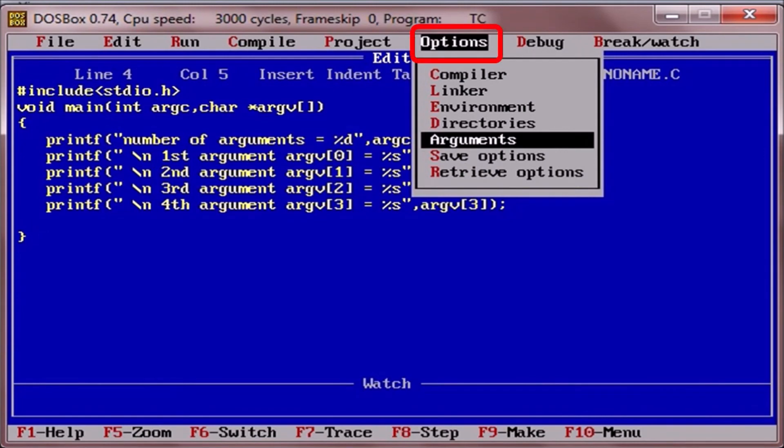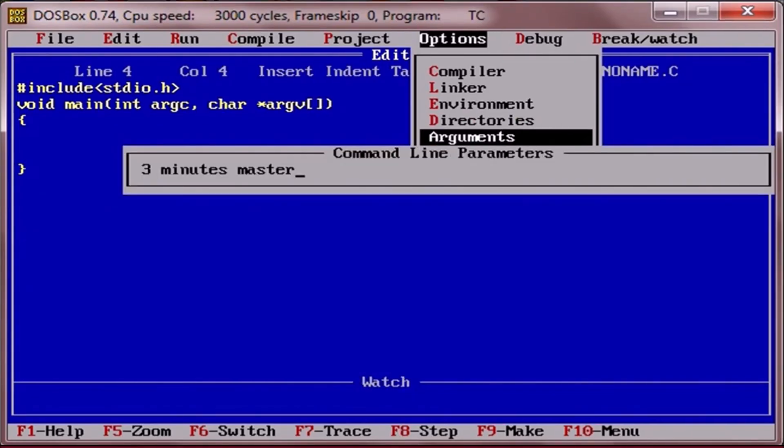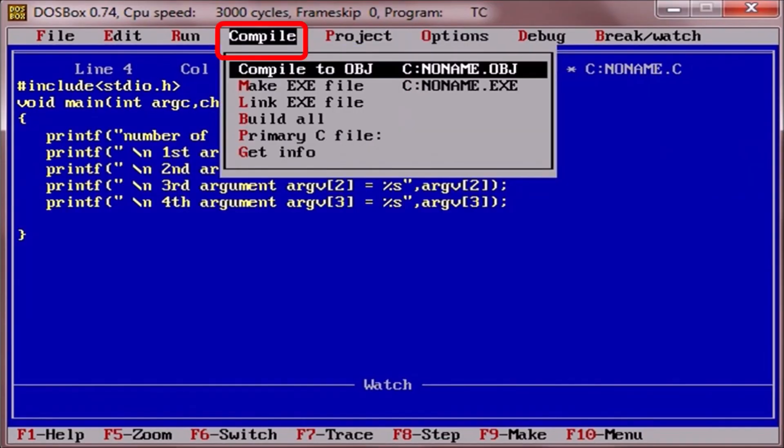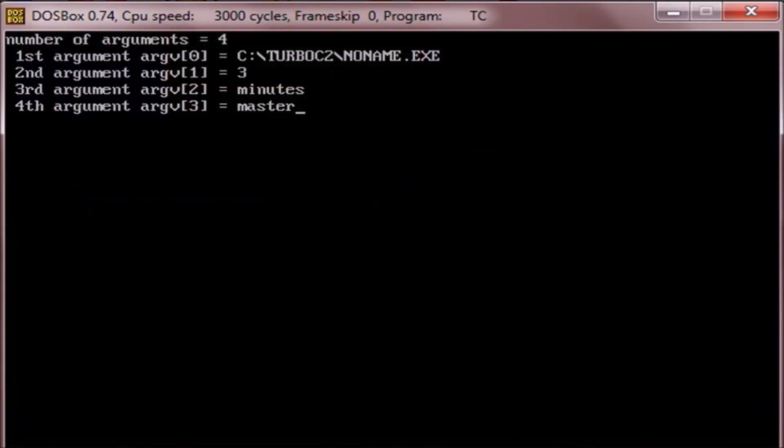Now let's pass arguments to main functions. Select options tab and then select arguments. Next, enter the arguments that you want to pass: 3 minutes master. Then compile and then run.